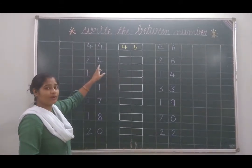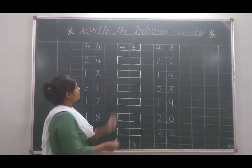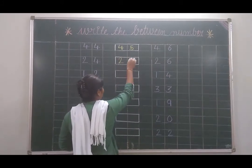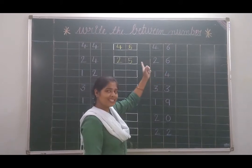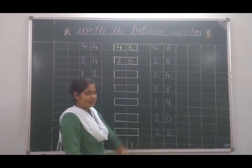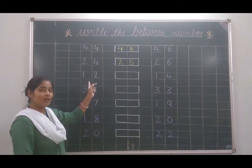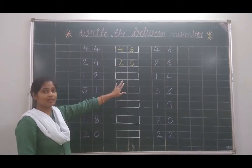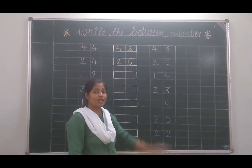Now 24. Which number comes after 24? 25. And which number comes before what is it? 25. So here also we can do that. Number 12. Which number comes after 12? And which number comes before 40?